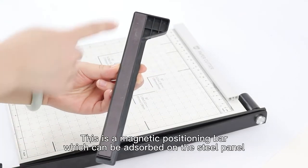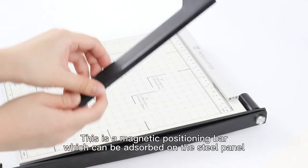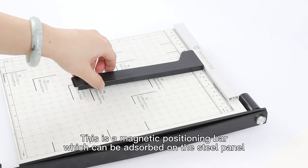This is the magnetic positioning bar, which can be adsorbed on the steel panel.